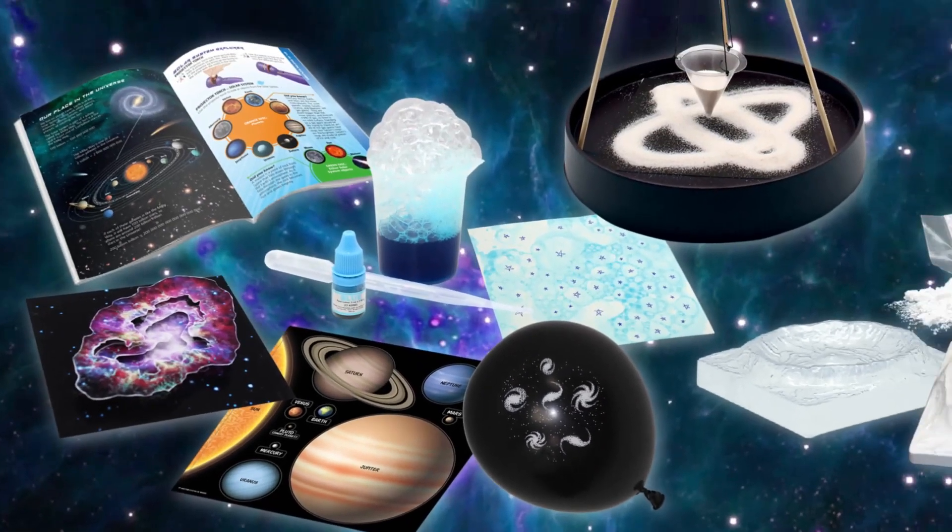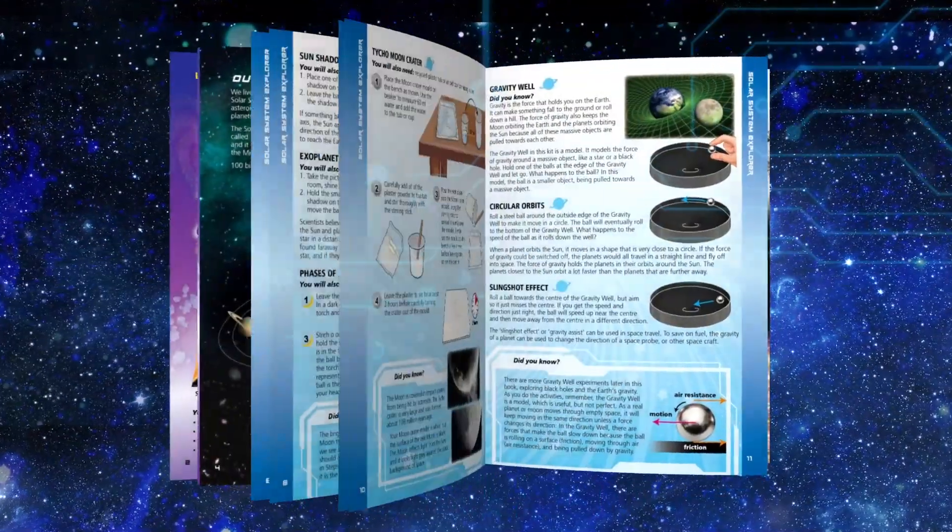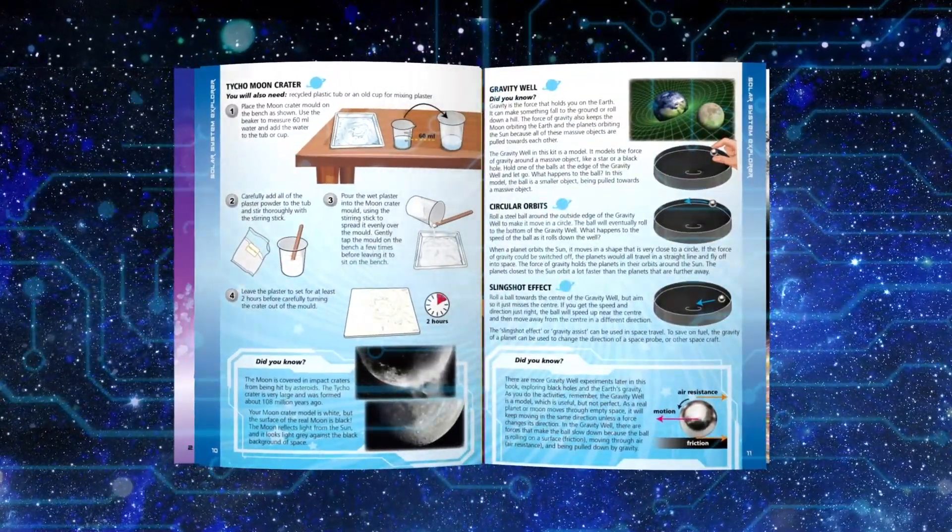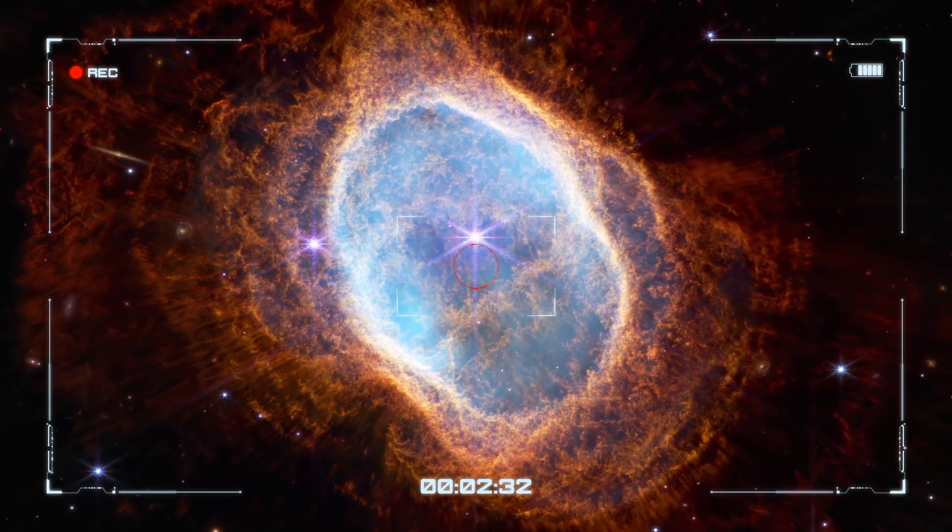The Cosmic Science Kit includes 36 tools and ingredients and a full color discovery book for over 40 science experiments with incredible images and science facts exploring black holes, galaxies and beyond.